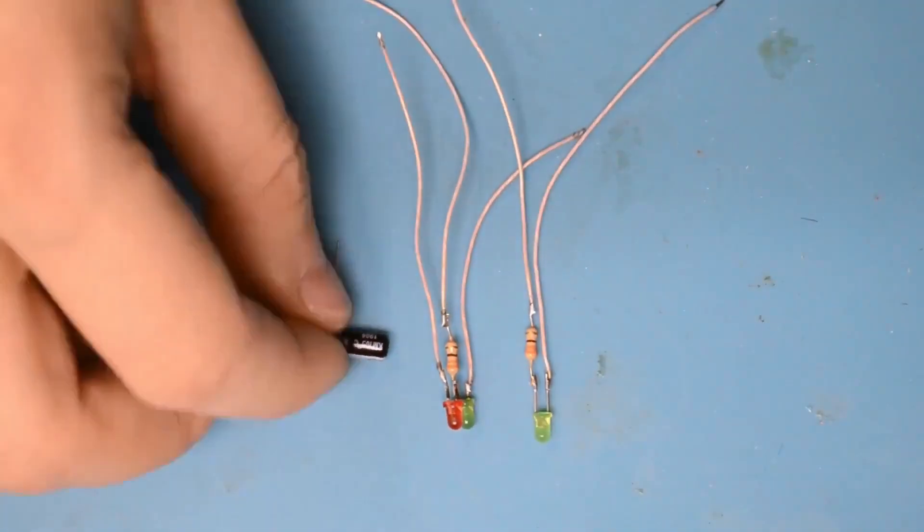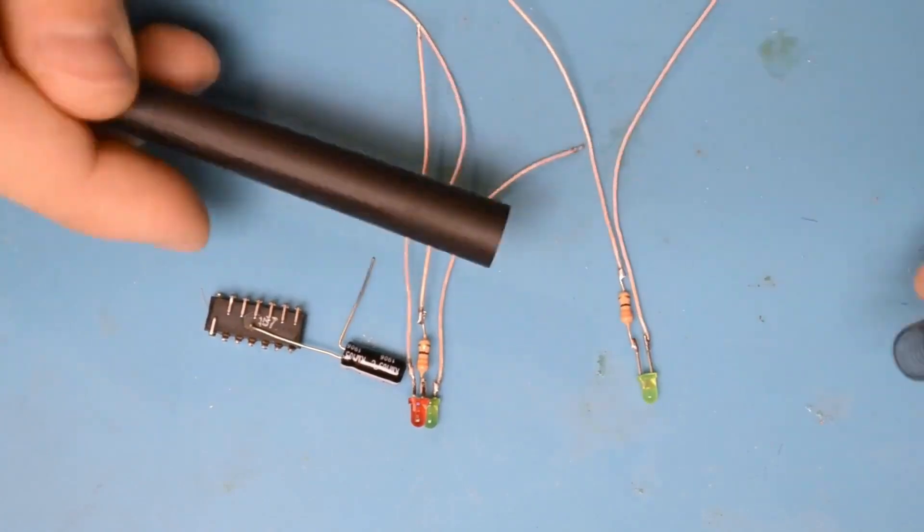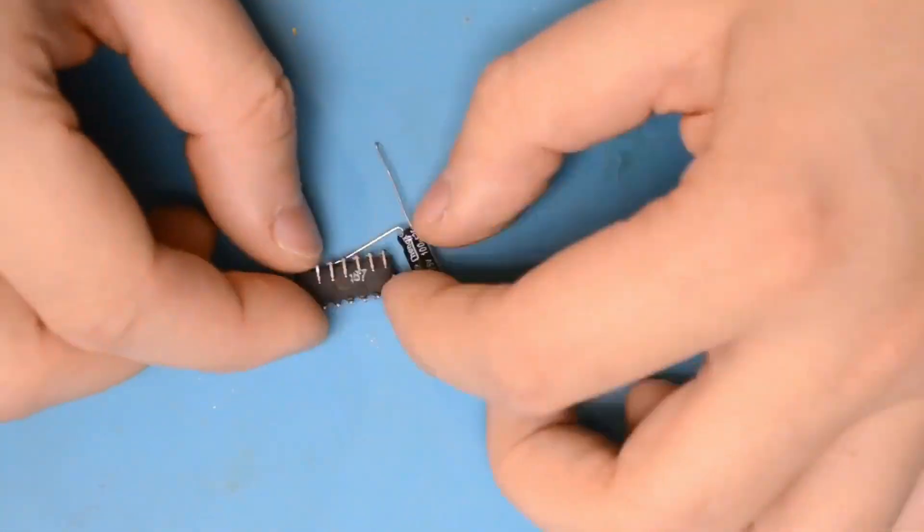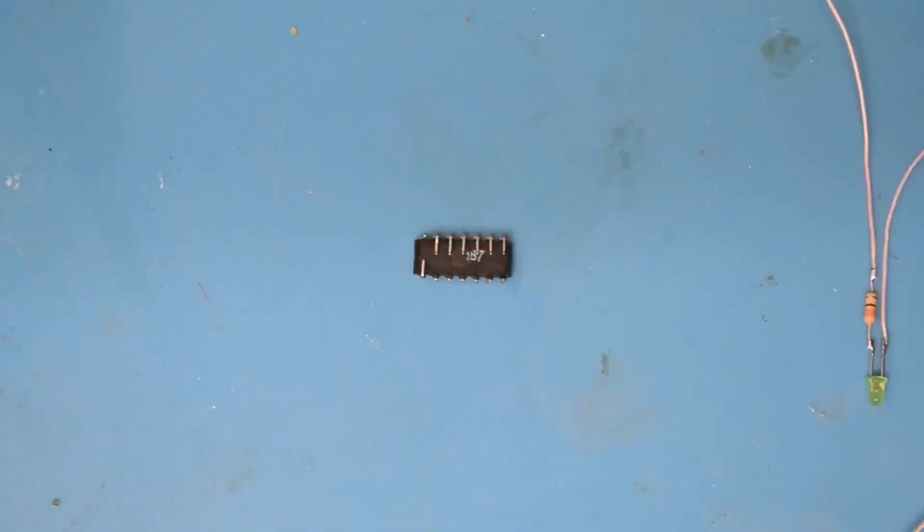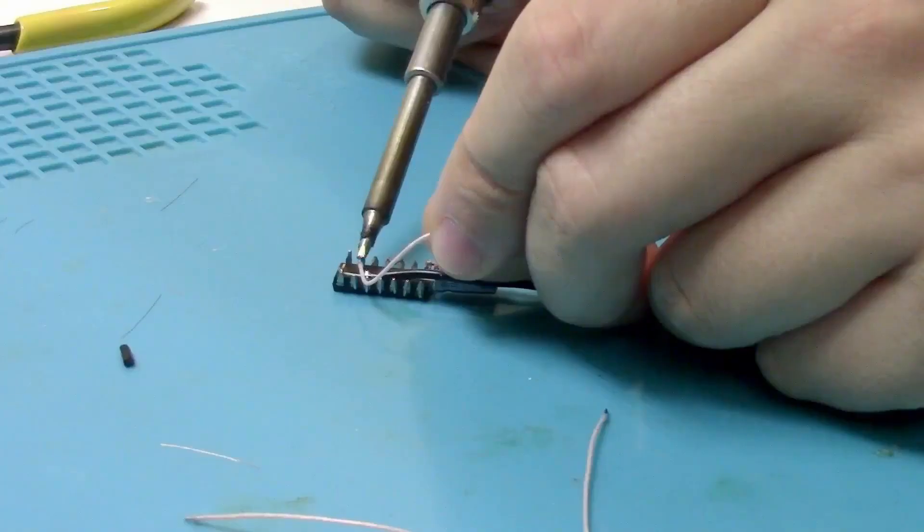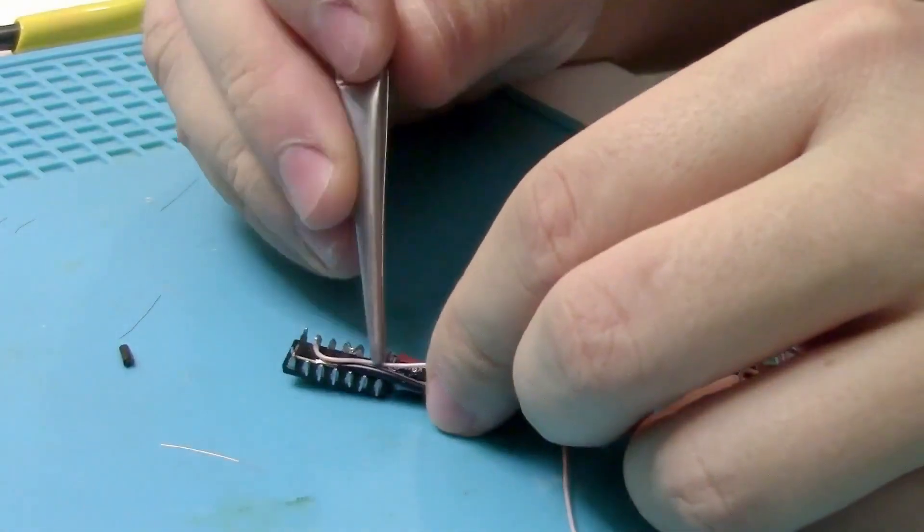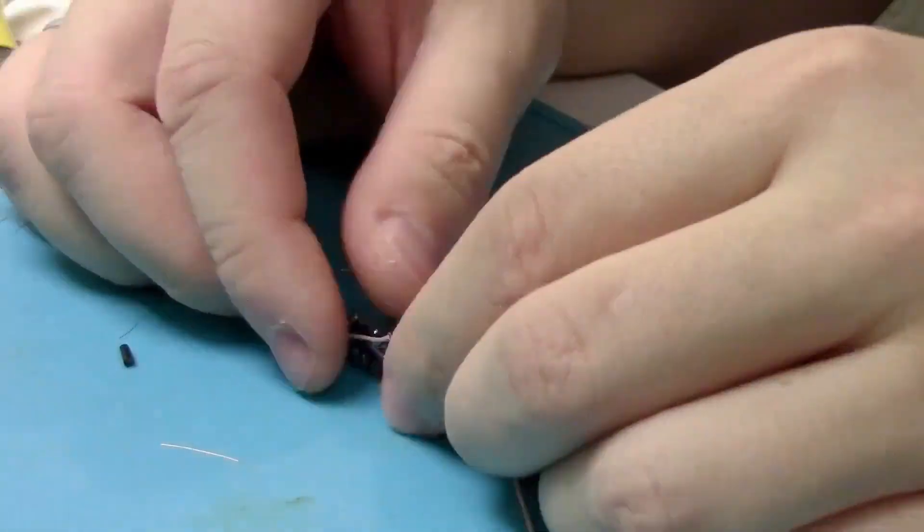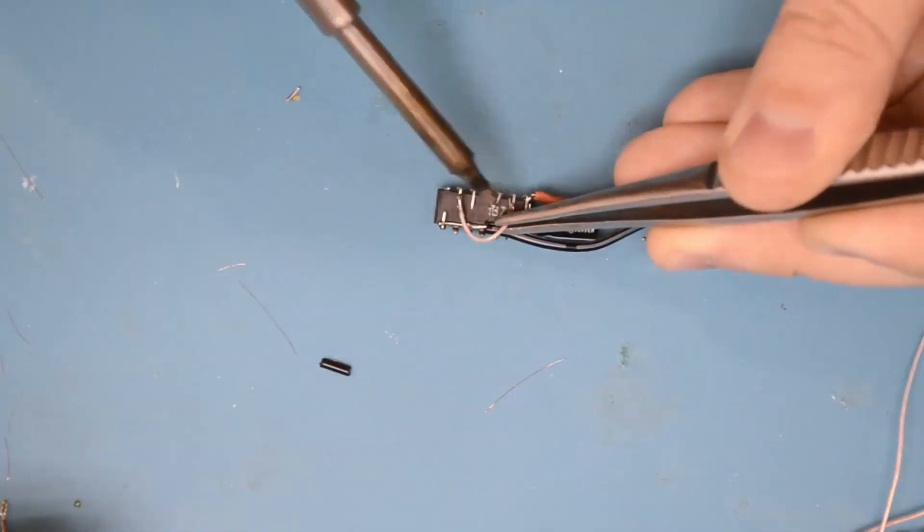For the LEDs indicating logical 0 and 1, I used a common resistor, since they won't be lit at the same time anyway. I soldered the resistor directly to the LEDs and ran wires from them. I decided to use the casing from a gel pen as the housing. I decided to solder an additional 100µF electrolytic capacitor to the microchip. Next, using the wires, we assemble everything according to the schematic.